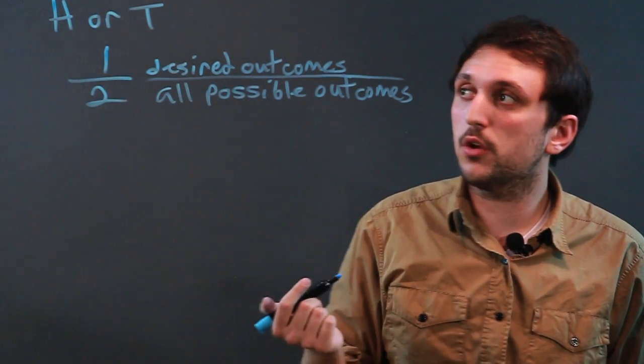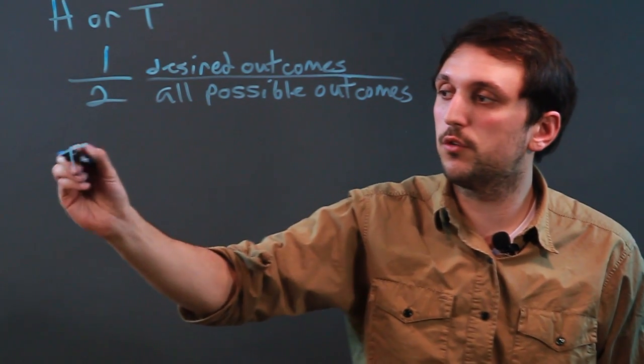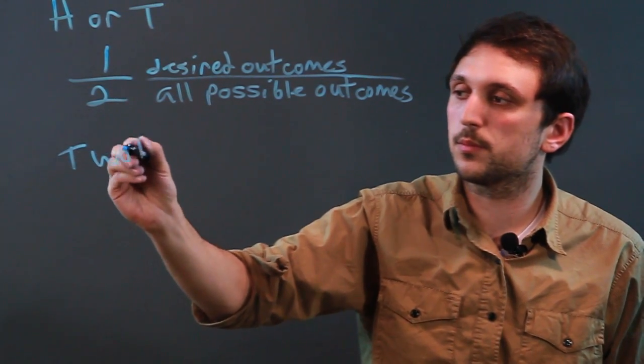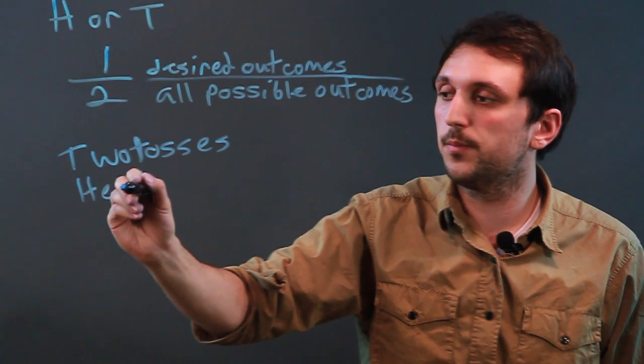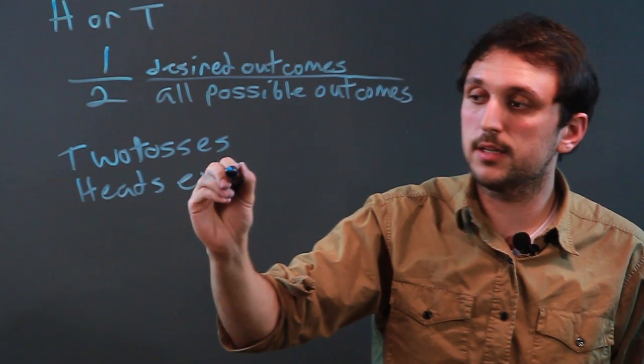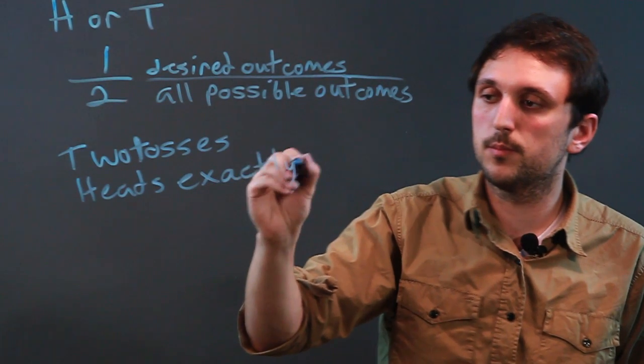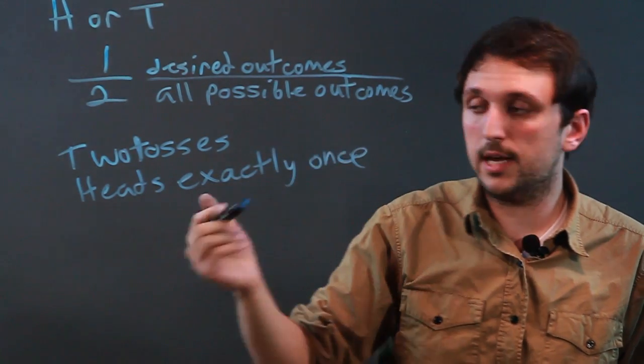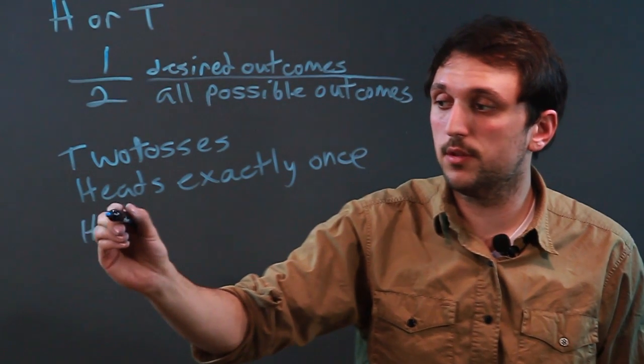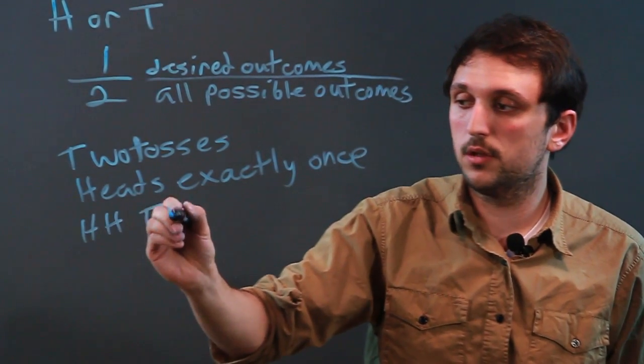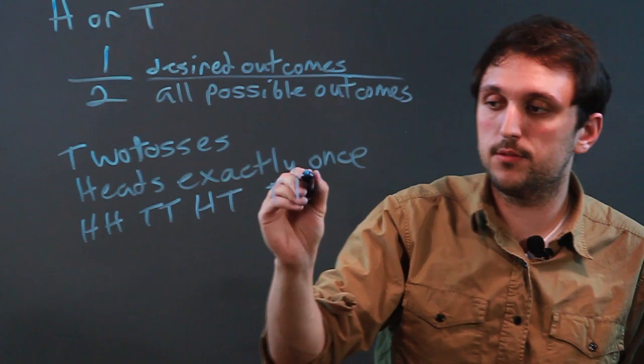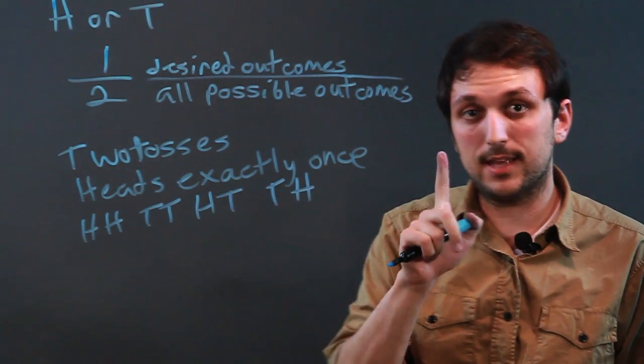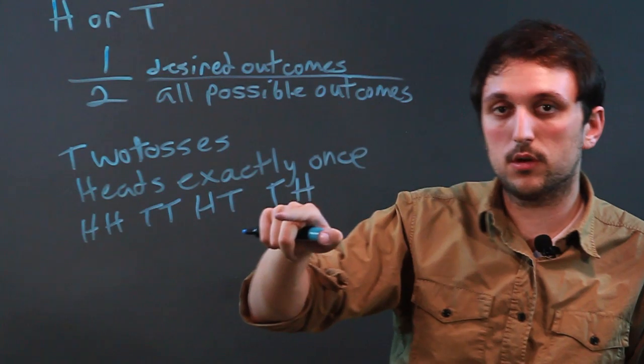So let's say we do two tosses, and we want heads exactly once. Well, all the outcomes would be: we could do heads heads, tails tails, heads tails, or tails then heads. And we want heads exactly once, well that's heads or tails, and tails and heads.